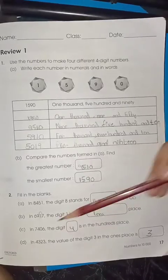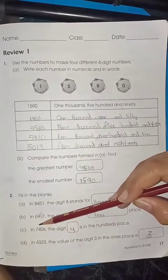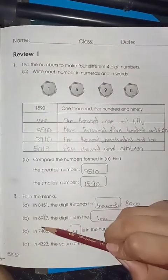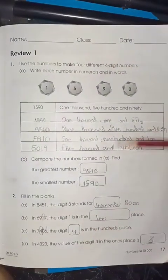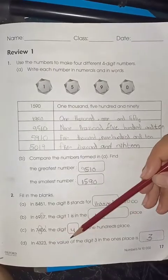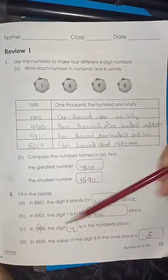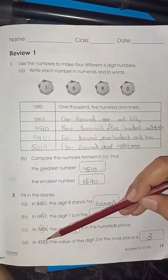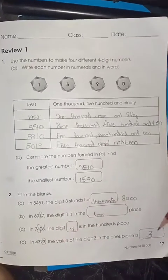7406. The digit dash is in the 100 place. We always read from the right side: 1, 10, and 100. So 4 is in the 100 place. The value of digit 3 in the 1 place - here you can see this is 1. The value is 3.